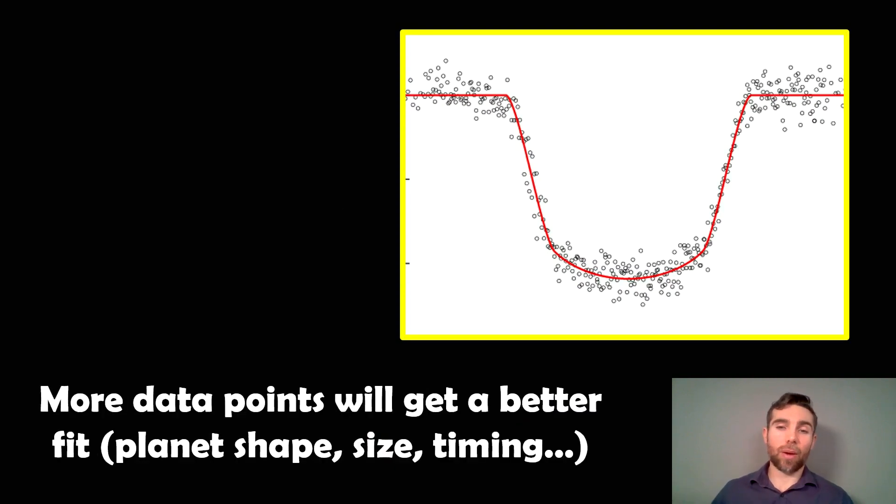You get a better transit shape which helps you get a better calculation of things like the planet's shape and its size, because to get its shape you get a slightly different shaped transit, which is interesting. Not necessarily the timing, because if you're overlaying them and there is any timing variation, that won't work with phase folding. You need to look at individual ones, when they arrive and when the expected time is. But that's phase folding, a technique where you can get a much better fit compared to just a single transit.